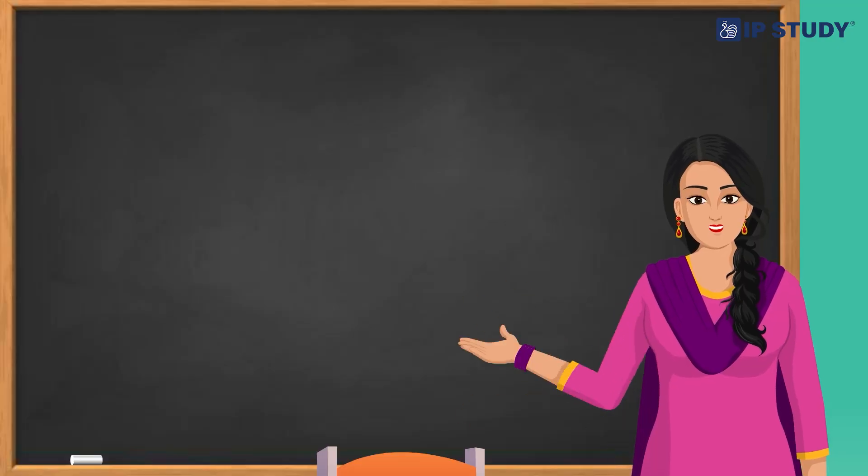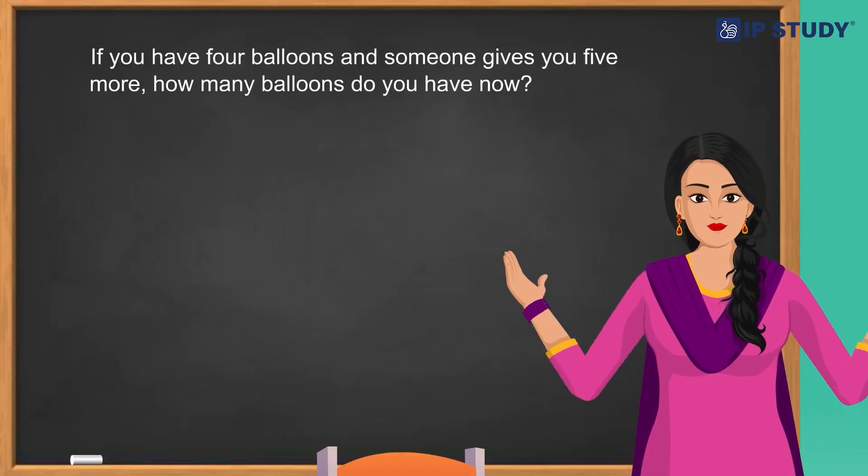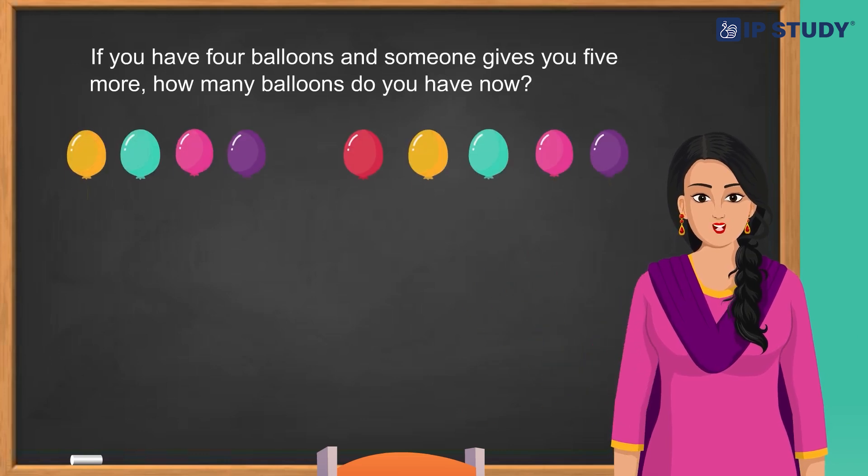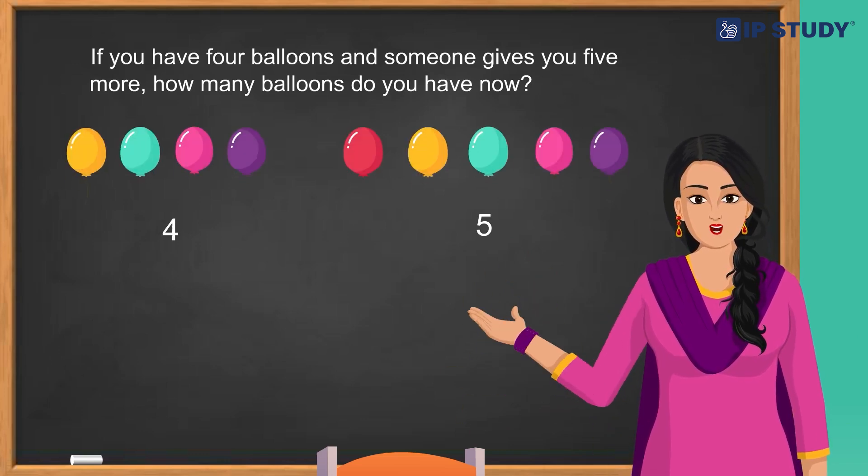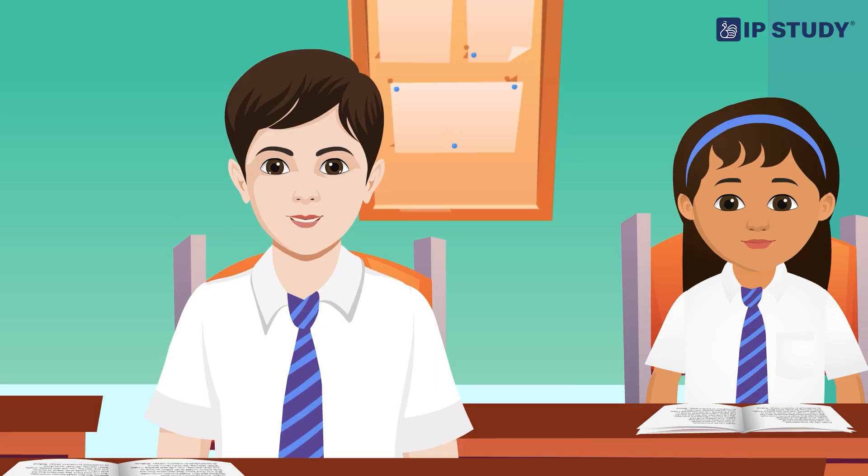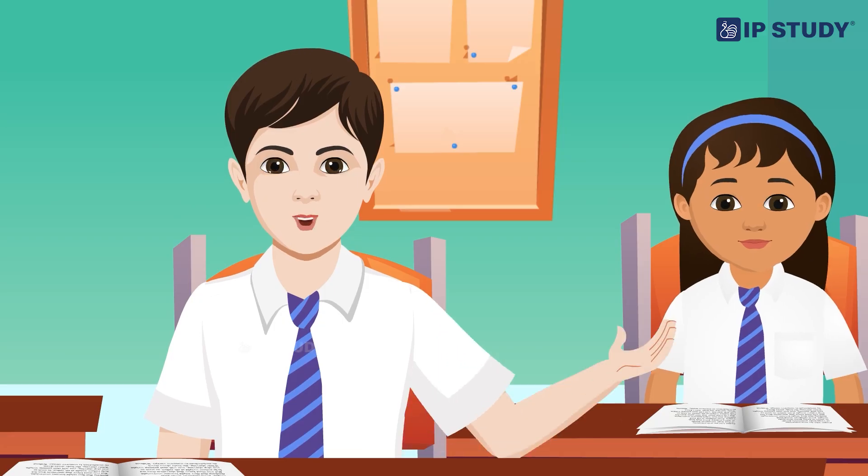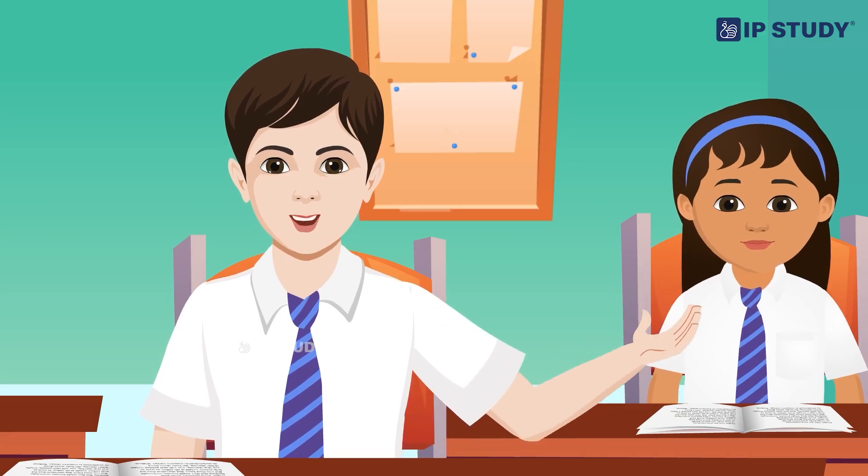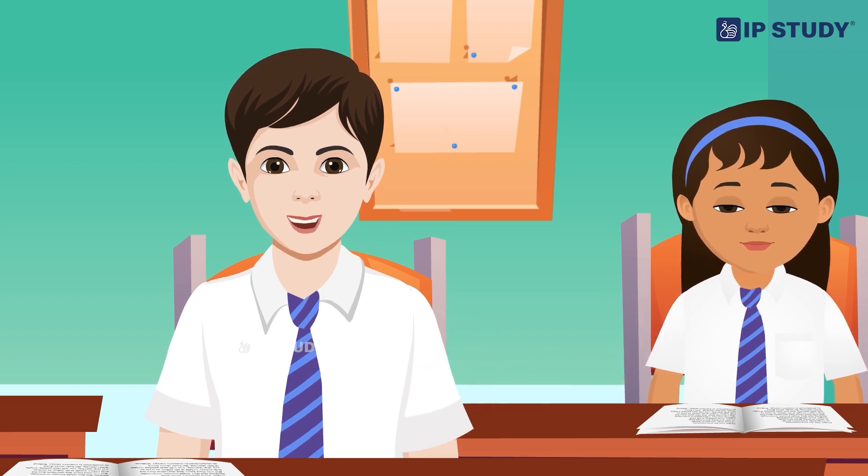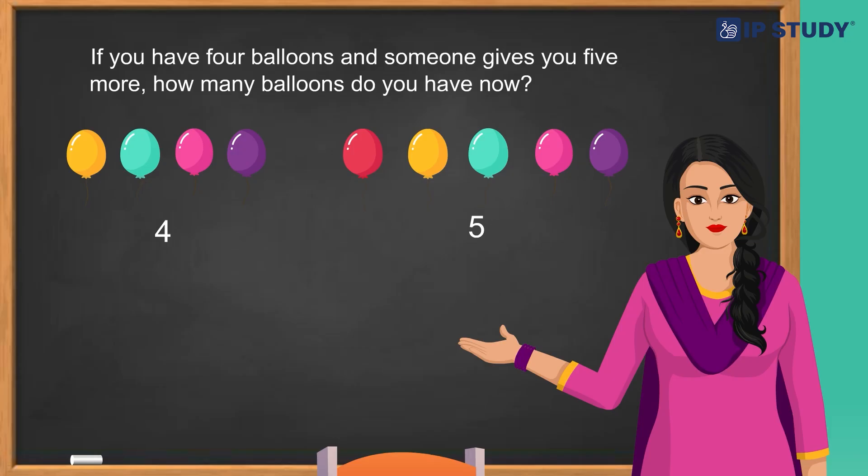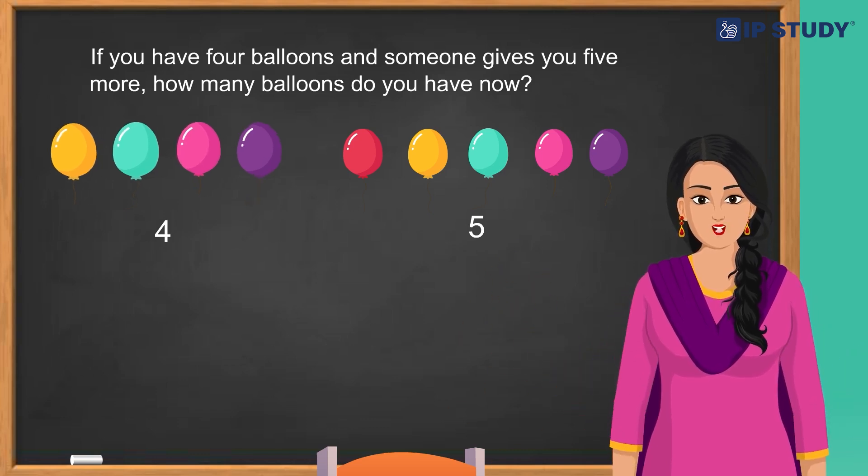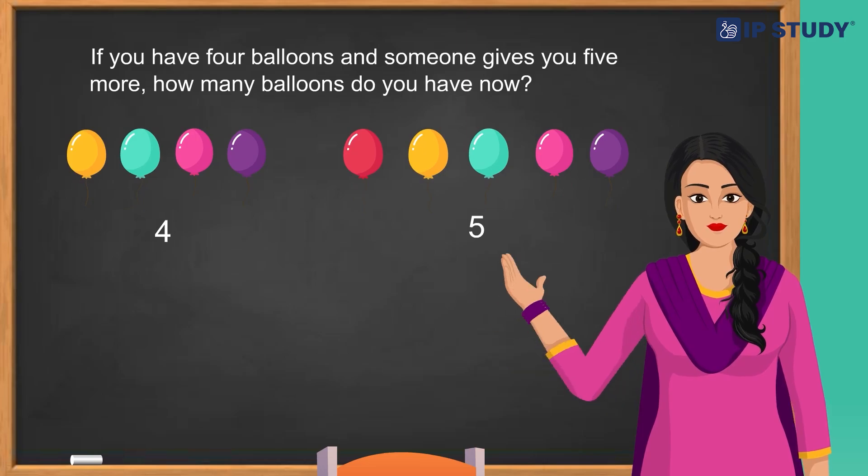Aman, you are doing great. Let's talk about the order in addition. If you have four balloons and someone gives you five more, how many balloons do you have now? Let's see, four then five more, that makes nine balloons. Excellent, Aman. Now let's use our number strip to check. Start at four and count five more steps. What number do you land on?